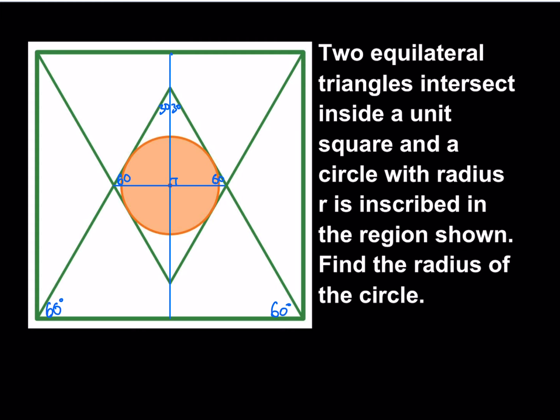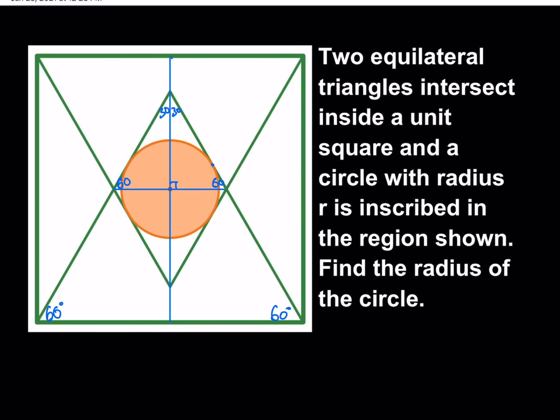Our goal is to find the radius. So I'm going to make another connection: I'll connect the center of the circle to one of the points of tangency. The radius is perpendicular to the tangent line at that point. That makes another 30-60-90 triangle. Now, these are nice things, but how about lengths? We know the angles — but how about lengths?